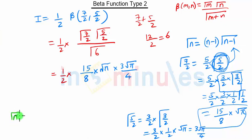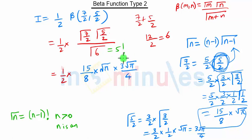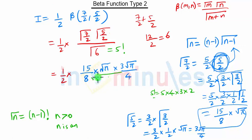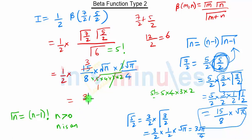Gamma of n is nothing but n minus 1 factorial when n is a positive integer. So gamma of 6 is 5 factorial. 5 factorial is 5 into 4 into 3 into 2. So in the denominator we write 5 into 4 into 3 into 2. This 3 and this 3 get cancelled, and 3 root pi into root pi gives pi.